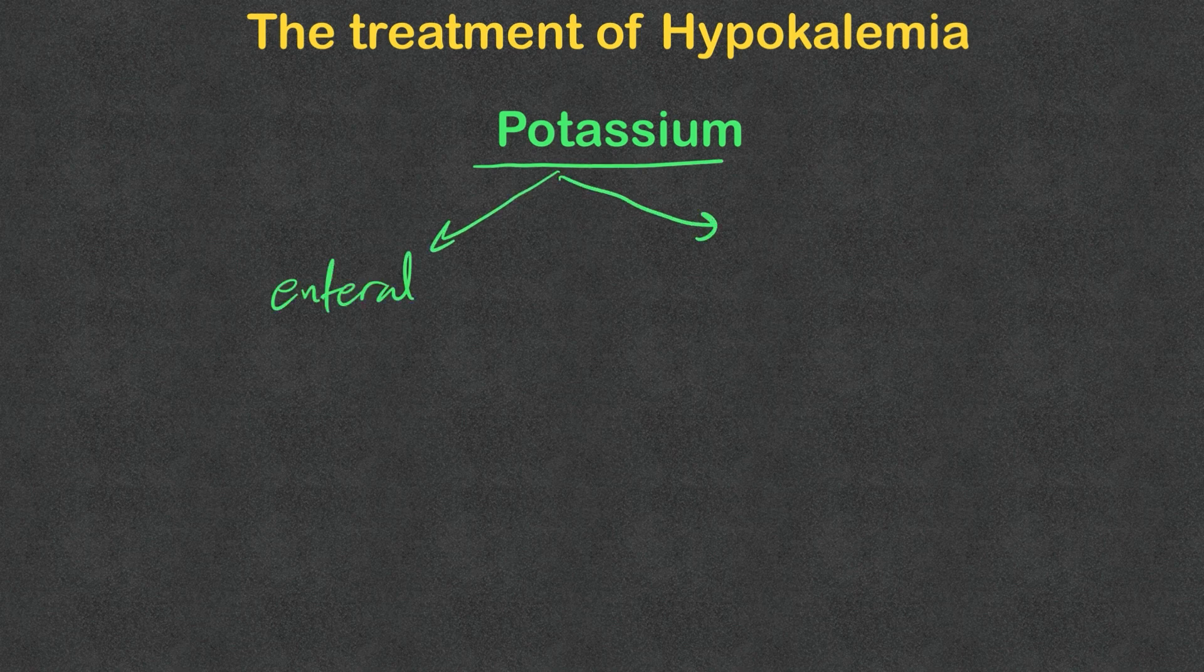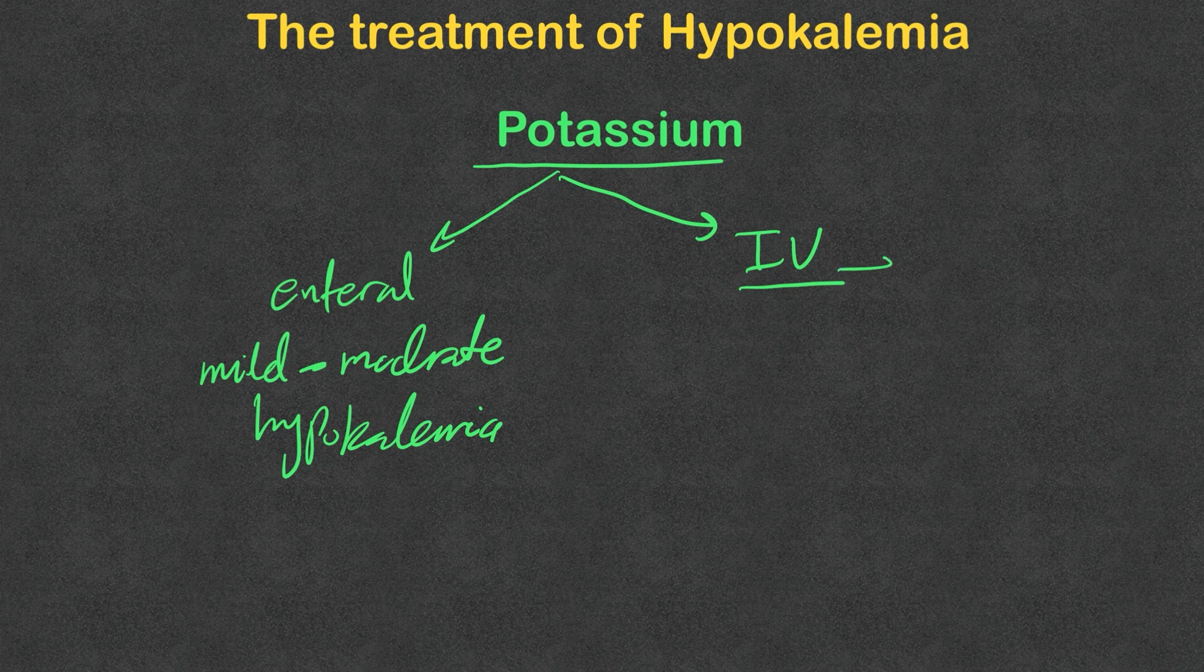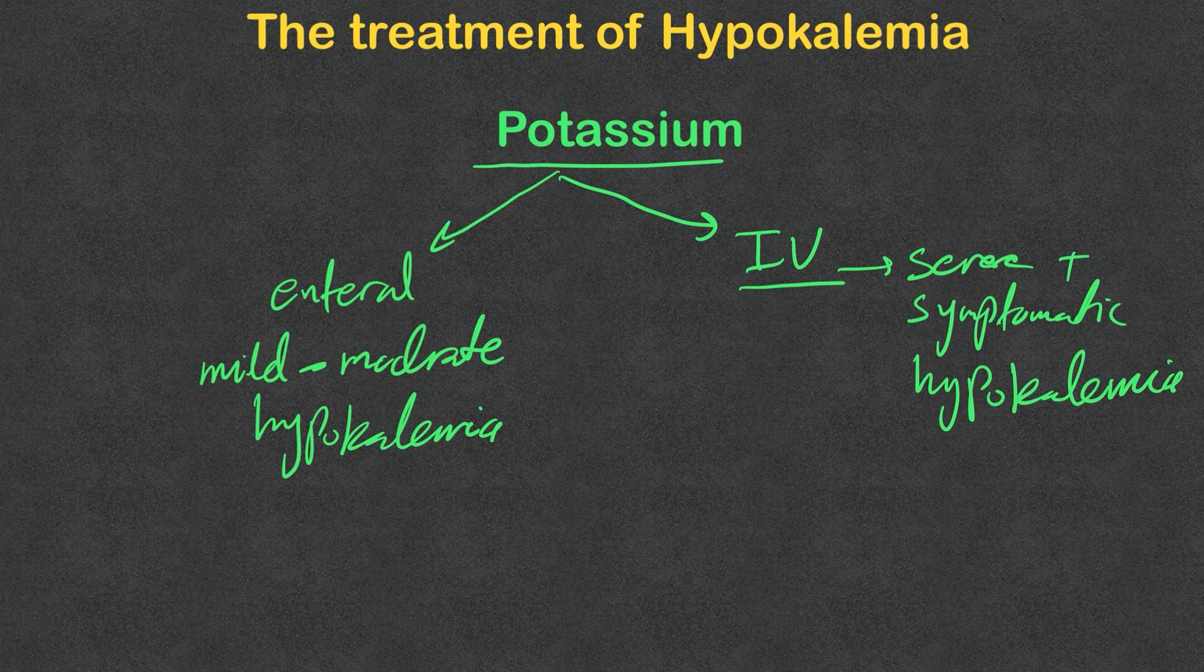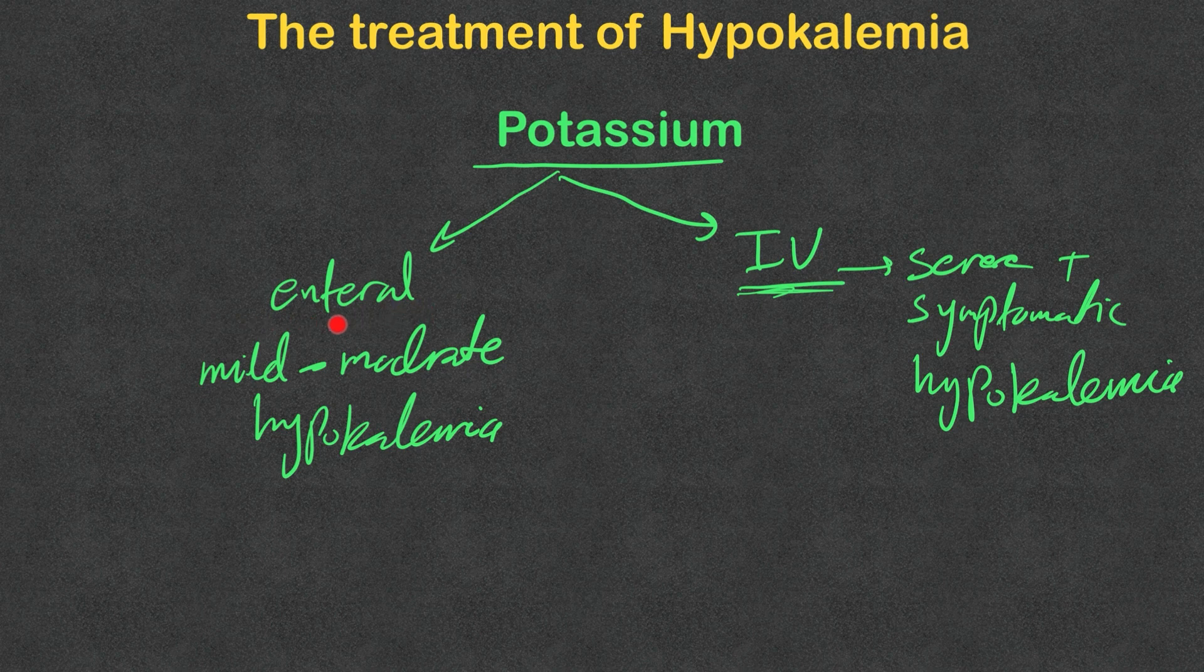Potassium supplements can be given through oral or enteral route, or through parenteral or IV route. Mild to moderate hypokalemia should be treated with oral potassium only, while IV potassium should be reserved for severe or symptomatic hypokalemia. Also, IV potassium supplements can be used in mild to moderate hypokalemia if enteral route is contraindicated, for example the patient is NPO or in shock with poor absorption status.